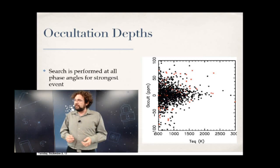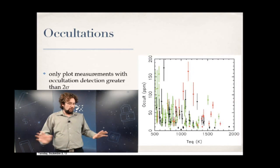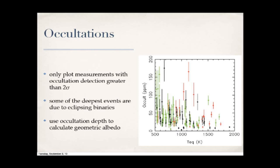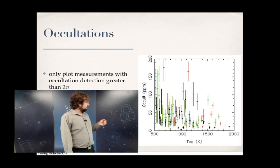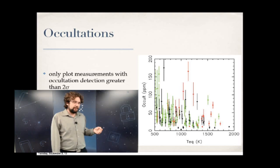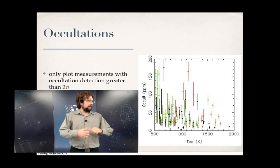Taking only detections greater than 2-sigma, plotted with the same color coding, you again see small objects with non-zero occultations from 1,000 Kelvin outward. Many of these will be blended eclipsing binaries because the occultation depth is too great for a planet — this is actually a way the Kepler mission uses data to weed out non-planetary events. But you can also get some interesting science from the real detections.